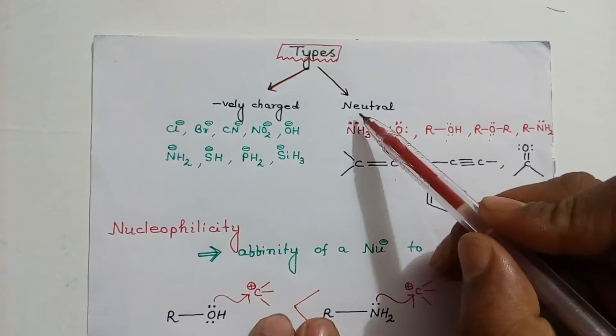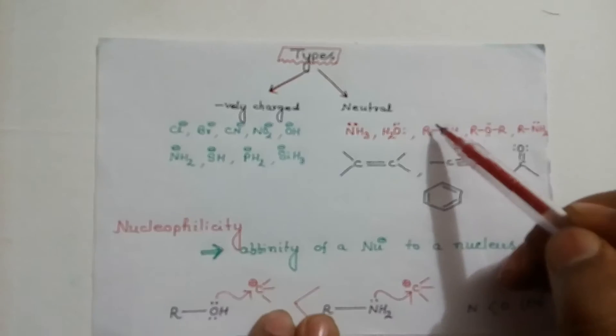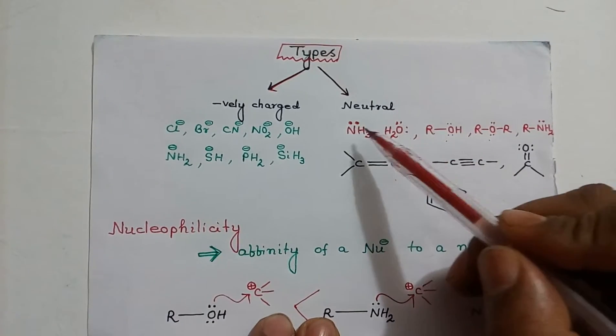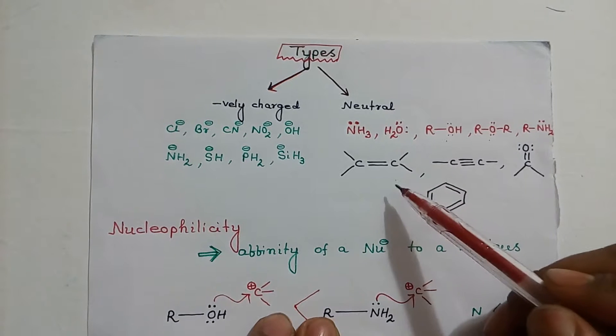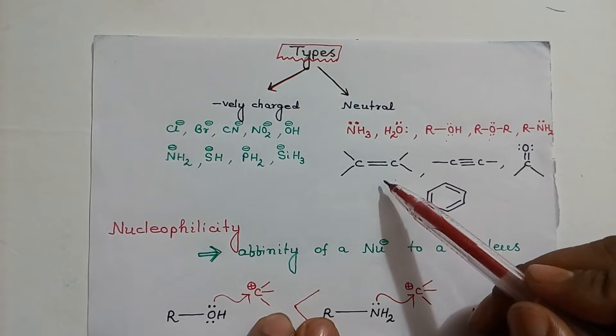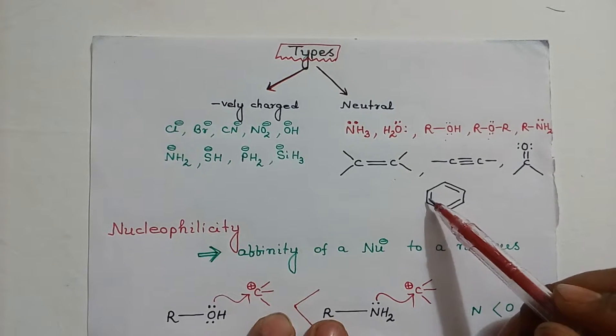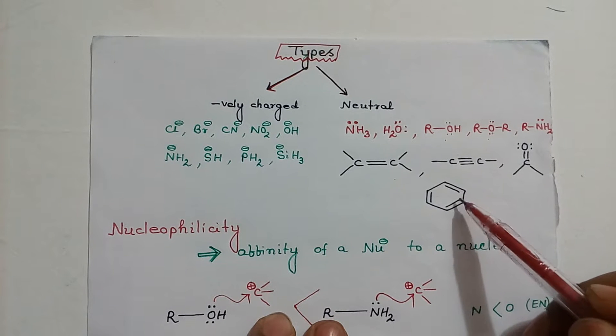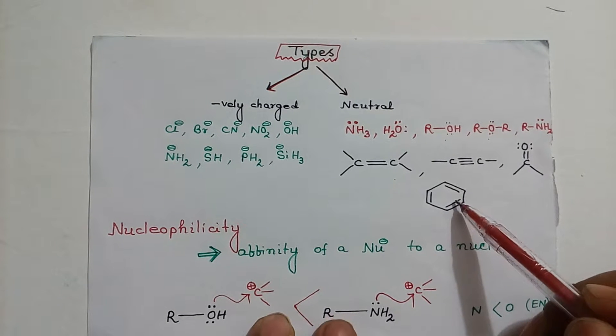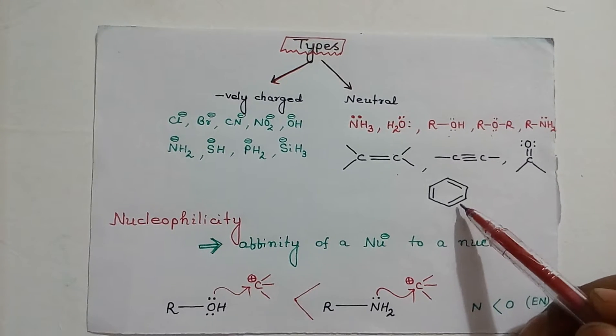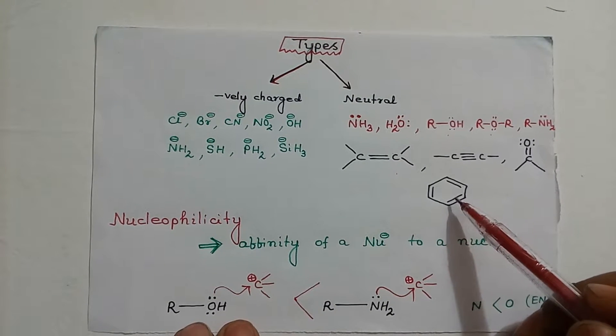Here, for neutral nucleophiles, they should contain at least one lone pair of electron or presence of pi bond. Benzene is a nucleophile because it has three pi bonds. Three pi bonds means six pi electrons. So, it is an electron-rich system and hence it acts as a nucleophile.